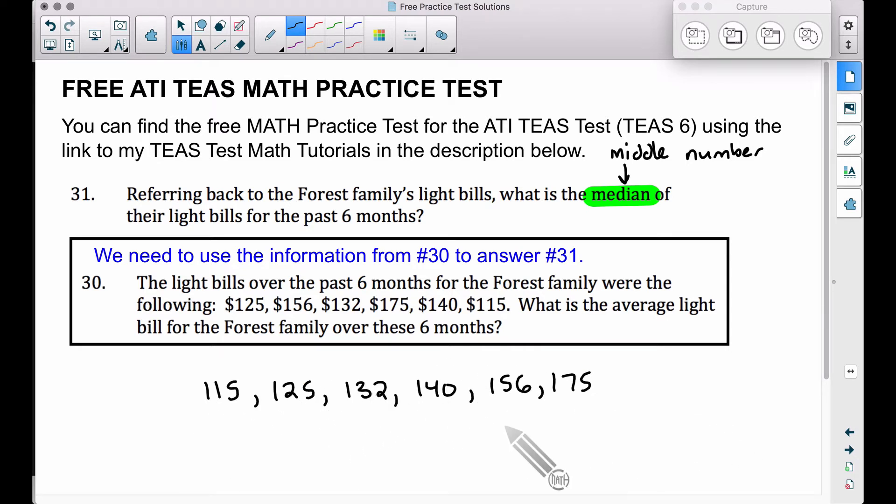Now, since we have six pieces of data, we don't have a number just sticking out right in front of us as being the median or the middle number. Now if I were to take away this 175, we would have an odd number of pieces of data and the median would be the 132 because it's right smack in the middle of these five numbers. However, we do not have that. We have six pieces of data, so what we want to do is we want to take the two middle numbers and we want to find the average of those two middle numbers.